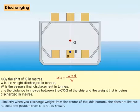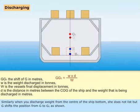Similarly, when you discharge weight from the center of the ship bottom, she does not list, but G shifts position from G to G1 as shown.